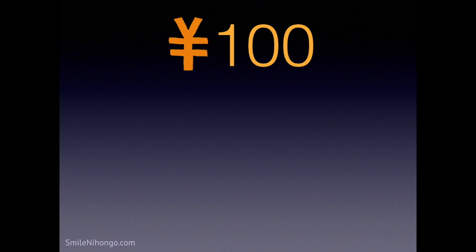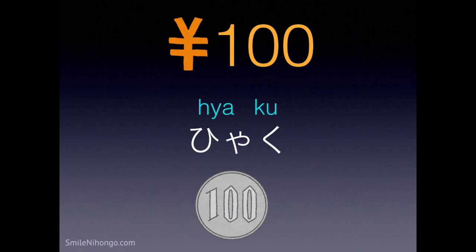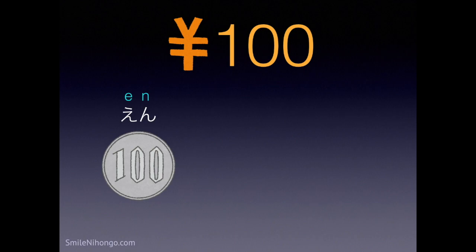But for now, let me just introduce you to 100 in Japanese, which is hyaku. Please keep in mind that we never say ichi-hyaku, meaning 100 — we only say hyaku. And this is the coin for 100 yen, which is hyaku en. 100 yen is about 1 dollar in the United States.